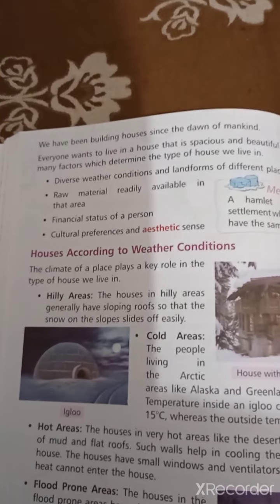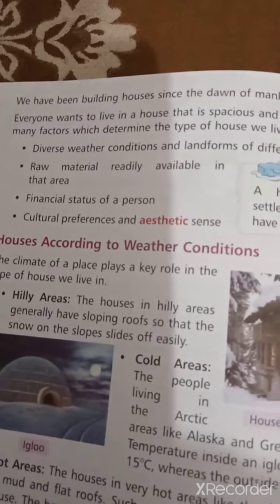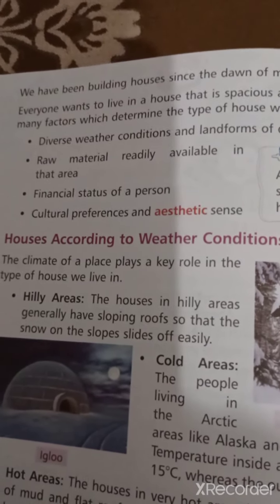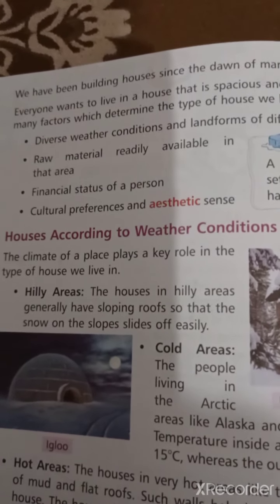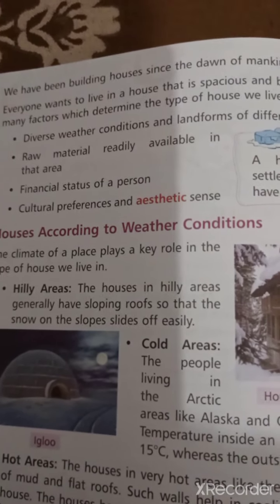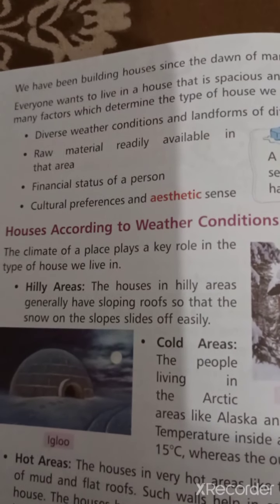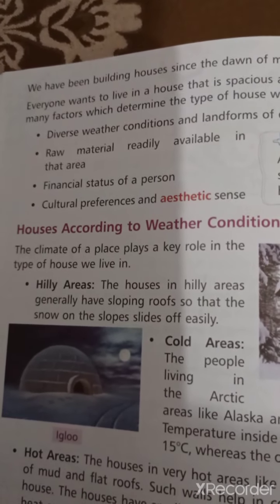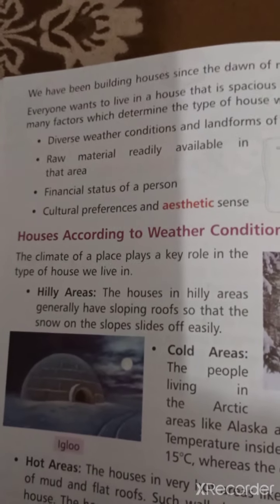Second factor is raw material readily available in that area - us ke hisaab se bhi house banae jaate hai. Third is financial status of a person. This is an important factor. Agar kisi ka financial status kam hai toh woha mehanga ghar nahi bana sakta.